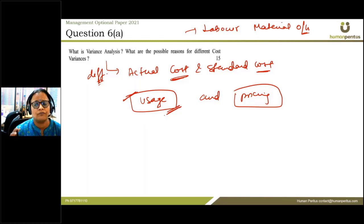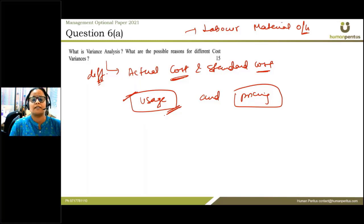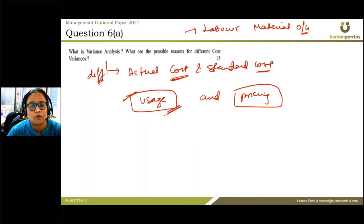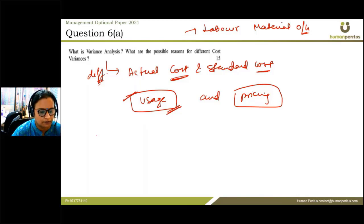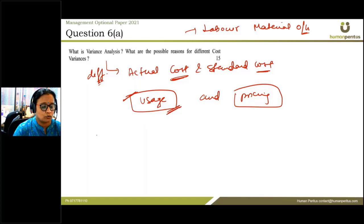Variance analysis is the analysis of different variances and their components. The purpose of variance analysis is to tell us what the reason for the variances is, so we can focus on controlling those variances. Under variance analysis, it is the analysis of the variances into their different constituent parts so as to examine the reasons for the variances.